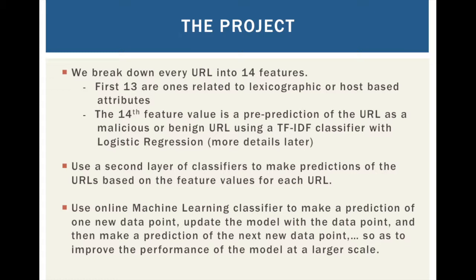We then use a second layer of classifiers to make predictions of the URLs based on the feature values of each URL. We also use an online machine learning classifier to make a prediction of one new data point, update the model with that data point, and then make a prediction of the next new data point, so as to improve the performance of the model at a larger scale.